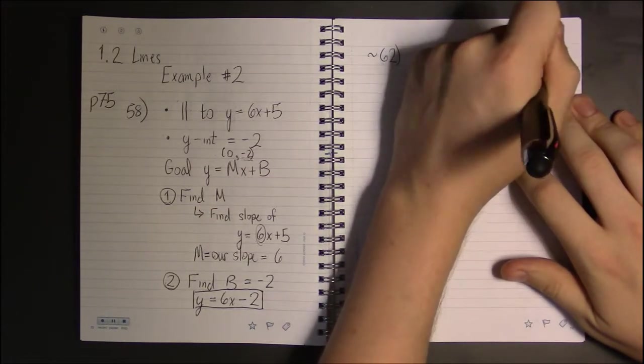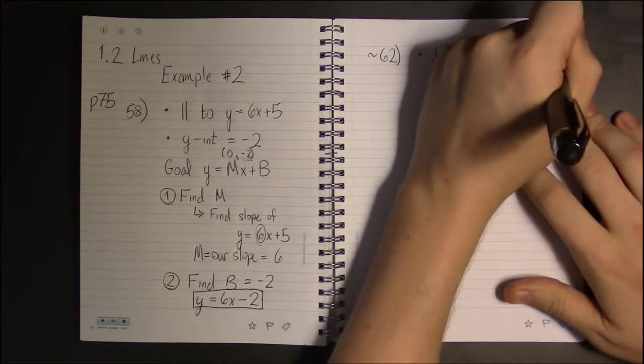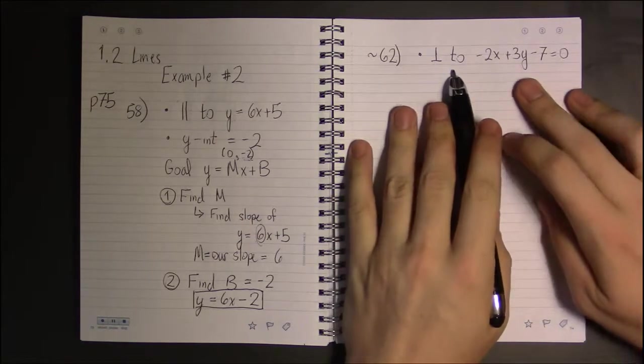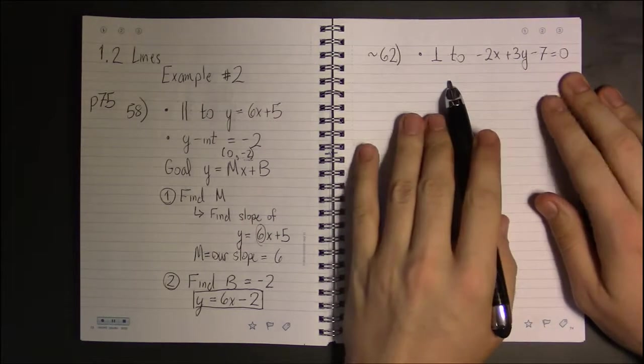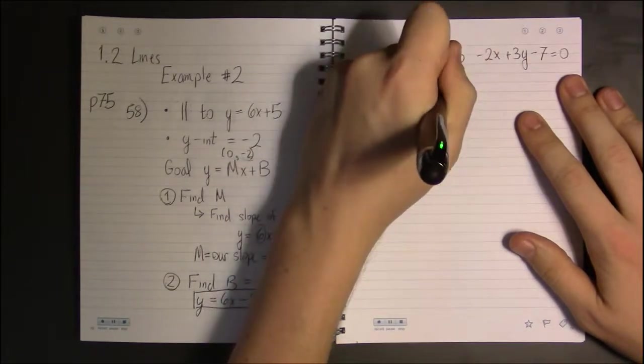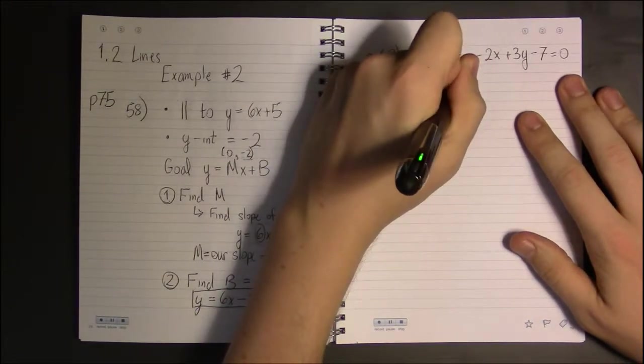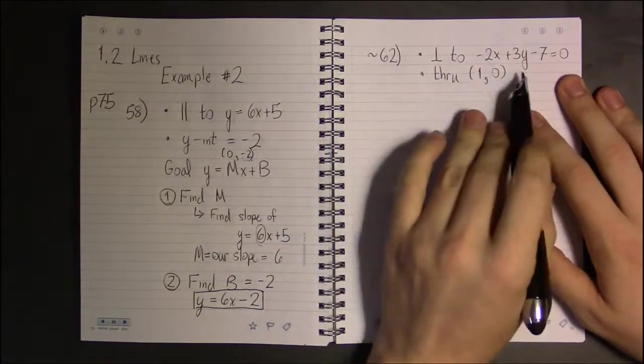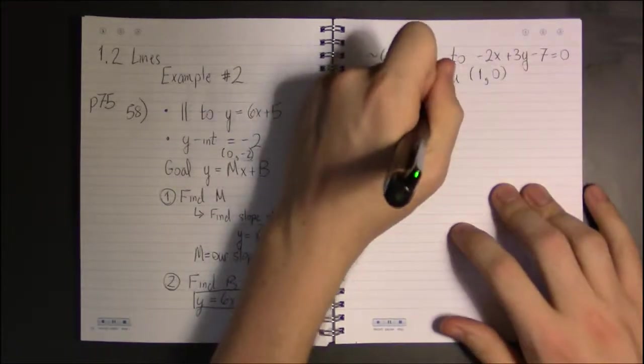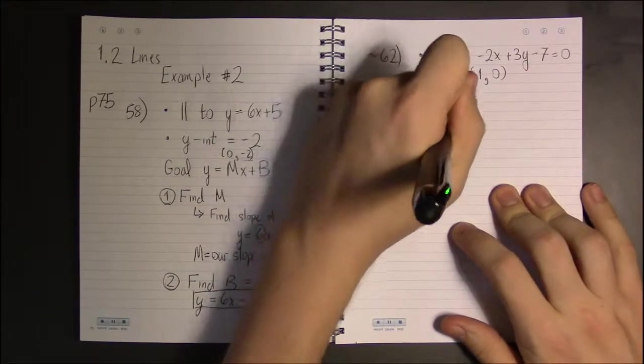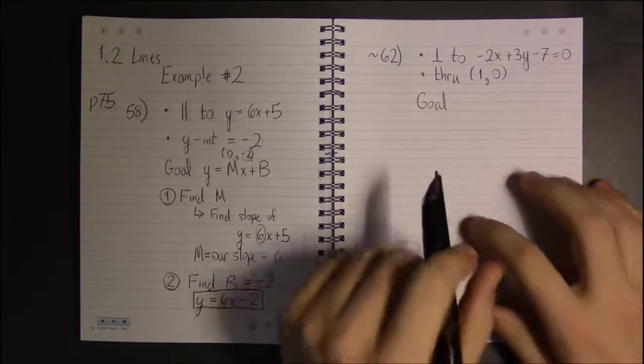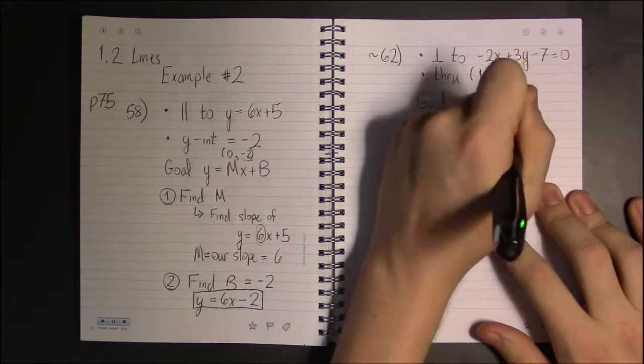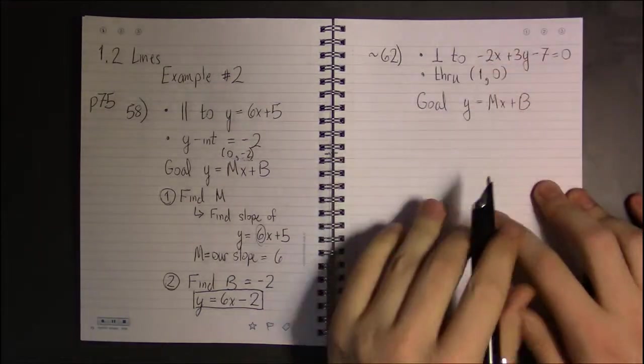I'm going to have to modify 62. Problem 62, as it's written, has this condition: find a line parallel to this line and passing through the point (1, 0). But I want a perpendicular example. I want another example where the given line is perpendicular to the line we're supposed to find. So I'm going to change the problem up and make it the way I want it to be.